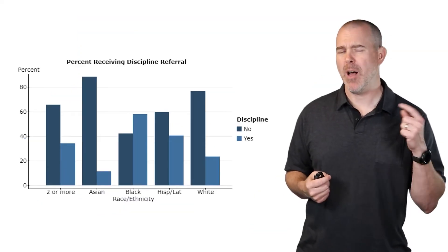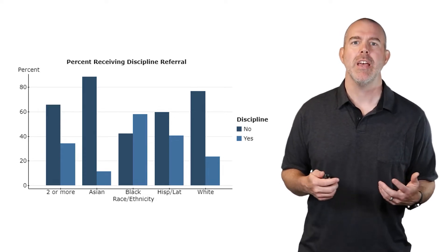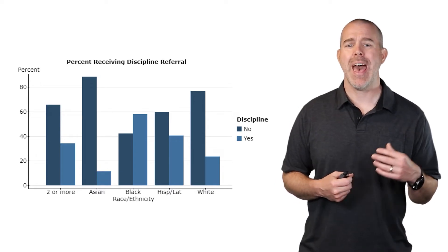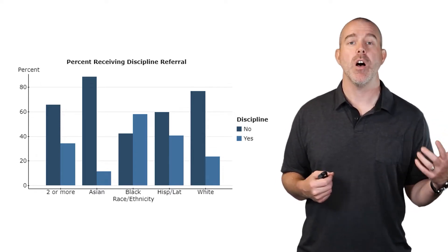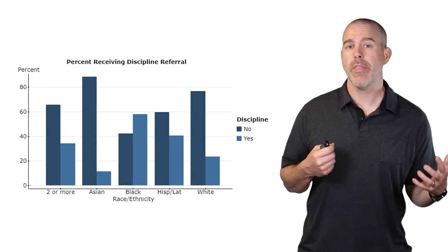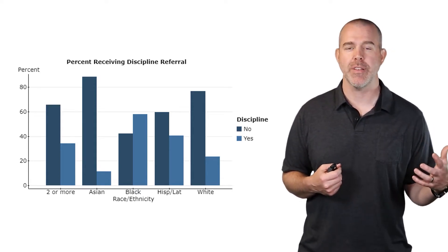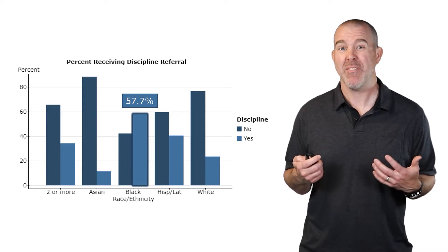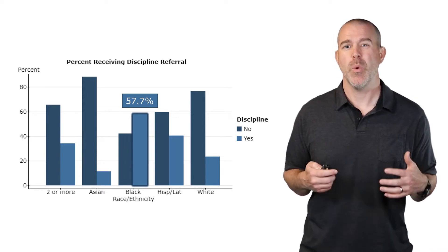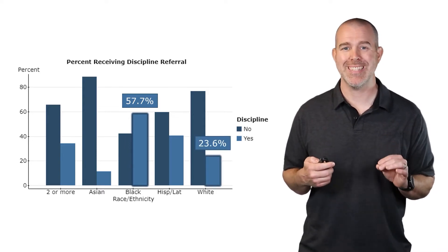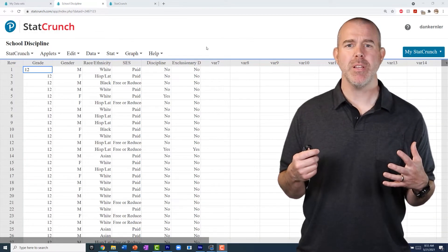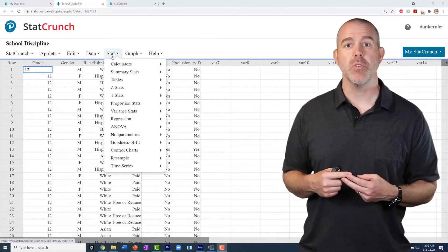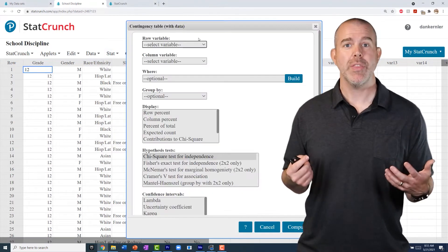This is data from a large Midwestern school district. The database includes race or ethnicity and whether a student received at least one discipline referral to the office in that school year. Black students have a 57.7% discipline rate in this district, while white students have a 23.6% discipline rate. We can make a contingency table of these in StatCrunch by going to Stat > Tables > Contingency > With Data.